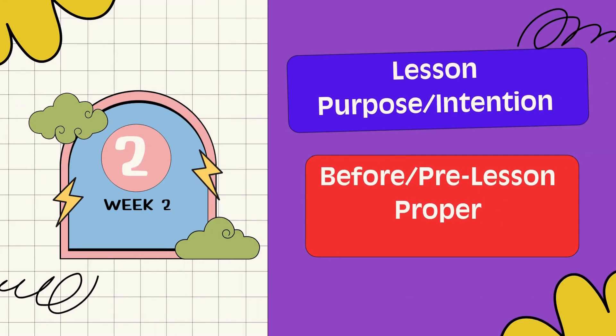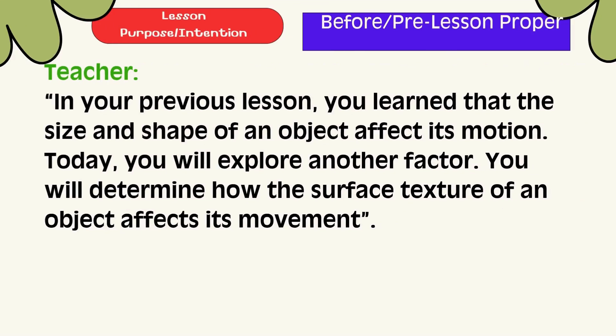Lesson Purpose: In your previous lesson, you learned that the size and shape of an object affects its motion. Today, you will explore another factor — you will determine how the surface texture of an object affects its movement.